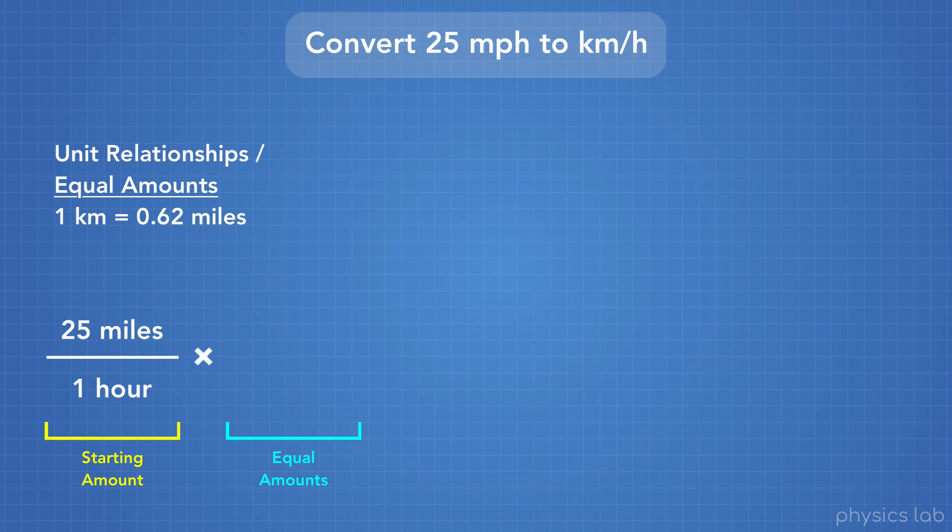Next, we write out the equal amounts, or the relationship between units. And since we have miles on top already, and we want to cross miles out, and only end up with kilometers, we're going to write our unit relationship, our equal amount, with miles on the bottom.